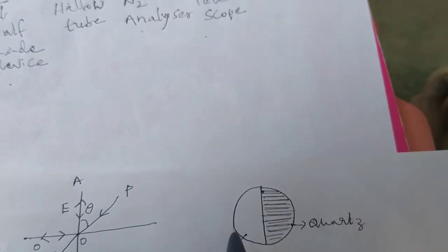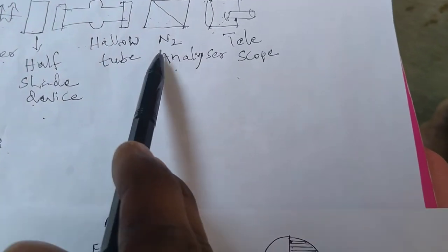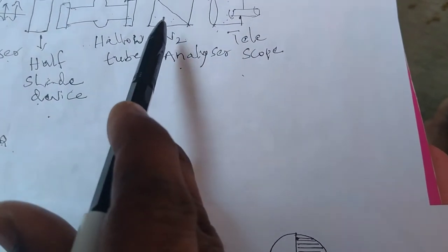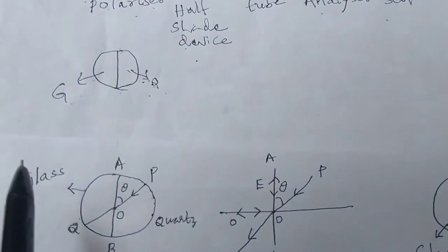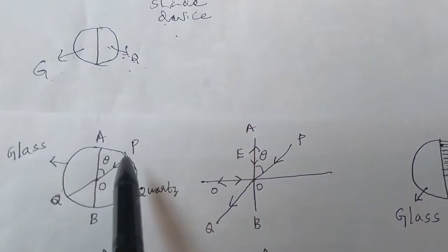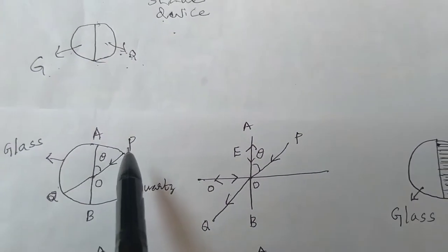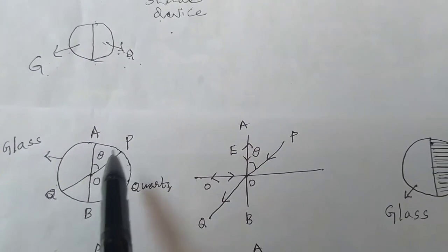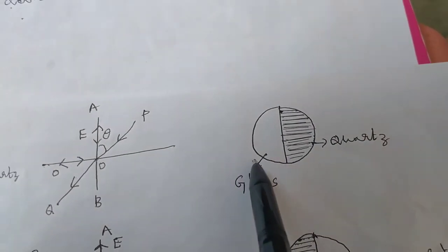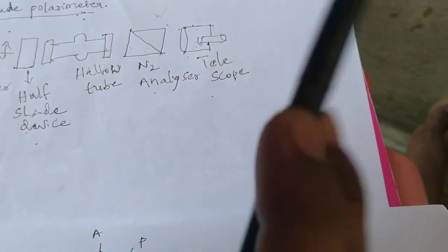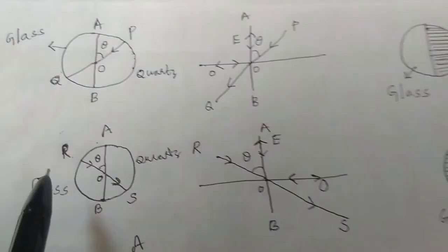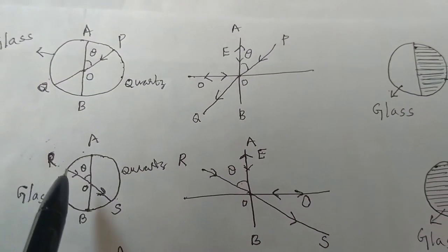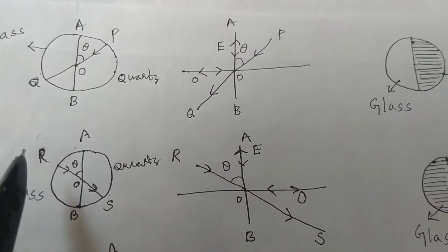By adjusting the Nickel prism such that its principal section is parallel to the path of the polarized light, you will get this image which can be seen through the telescope. If the light passes through the glass plate into the quartz plate along the RO direction, the following explanation applies.